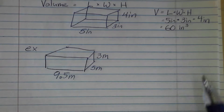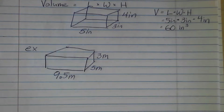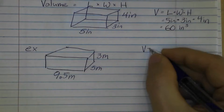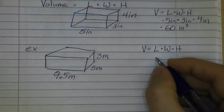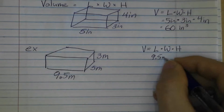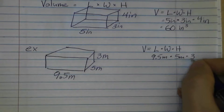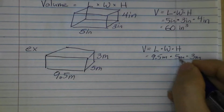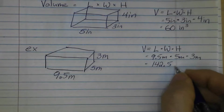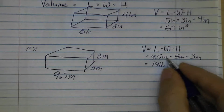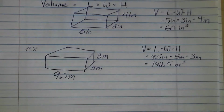I've drawn another one — go ahead and try this one, using the previous example as a reference. Press play when you think you have it finished. For this one, we do length times width times height: 9.5 meters times 5 meters times 3 meters. 9.5 times 5 times 3 equals 142.5, and meter times meter times meter gives us meters cubed, so the answer is 142.5 meters cubed.